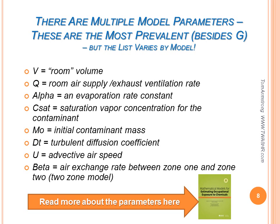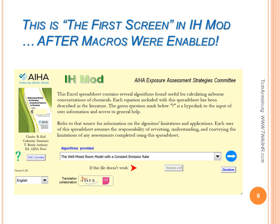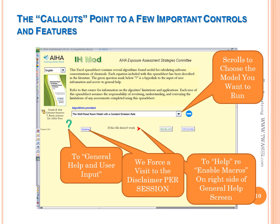This is the first screen in the IHMOD spreadsheet after macros are enabled. The Visual Basic program is set to require a visit to the disclaimer on each modeling session. You may need to enable macros on your machine to get this far, and you will need administrative rights to your computer to do so. The callouts on this page show a few of the important controls and features in IHMOD — for example, a link to the general help screen which we will see next, a button to visit the disclaimer, and some help on enabling macros.